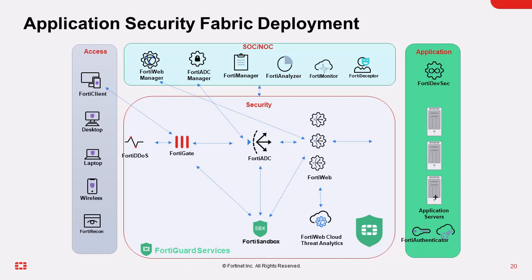On the right-hand side, you see the application segment, where application servers are typically deployed. Within the chart, you see two FortiNET security products that can be deployed to protect and enhance security of application servers: FortiDevSec and FortiAuthenticator. FortiDevSec orchestrates and automates continuous application security testing. It allows developers to detect and remediate security vulnerabilities in app source code, open source, and third-party libraries. You can test, detect, and remediate security vulnerabilities within the DevOps continuous integration, delivery, and deployment lifecycle.